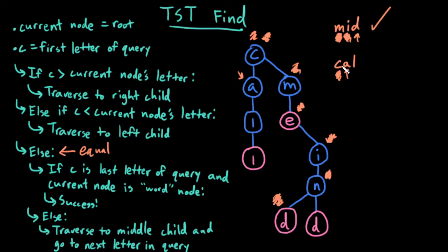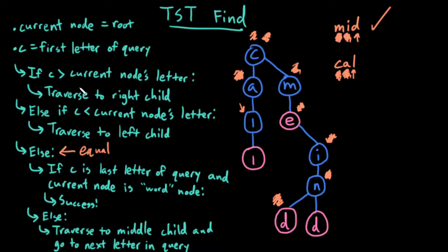If a is greater than a, nope. Otherwise if a is less than a, nope — a is equal to a, so I go to my else. If my current letter is the last letter of my query, nope, that's not the case, so I go to the else: traverse to the middle child and go to the next letter in my query. Now l is equal to my current node, so I'll jump straight there.